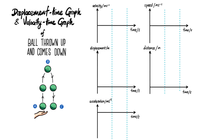In this video we're going to talk about displacement-time graph and velocity-time graph for a ball that's being thrown up, then goes to the highest point, and then comes back down to your hand. We're going to assume that there's no air resistance for this scenario. As a reference, because the ball is going upwards initially, we'll fix going up as positive.